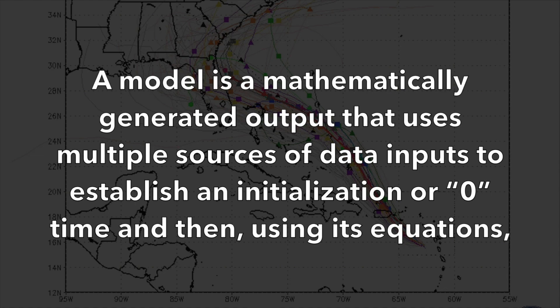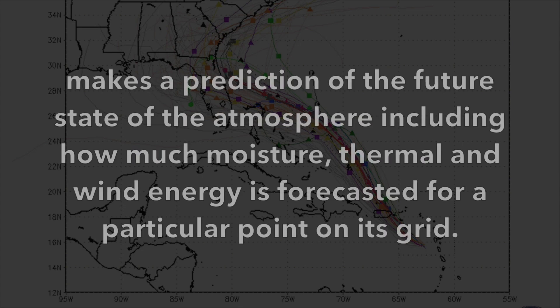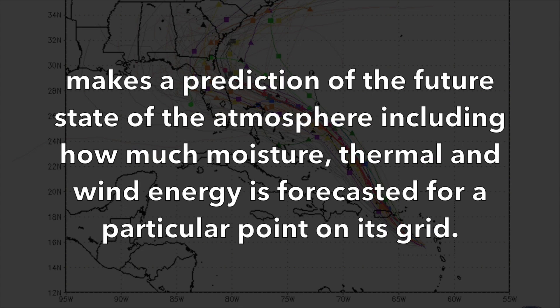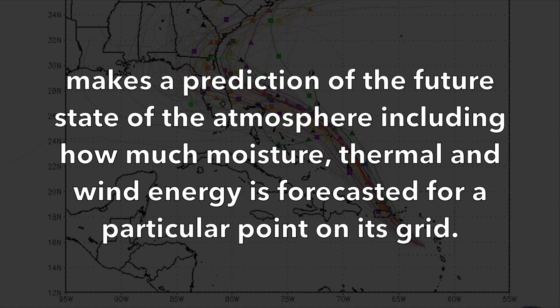To answer this question, we are going to give the technically sounding long-worded answer first, and then break it down into something easier to digest. A model is a mathematically generated output that uses multiple sources of data inputs to establish an initialization, or zero time, and then, using its equations, makes a prediction of the future state of the atmosphere, including how much moisture, thermal, and wind energy is forecasted for a particular point on its grid.